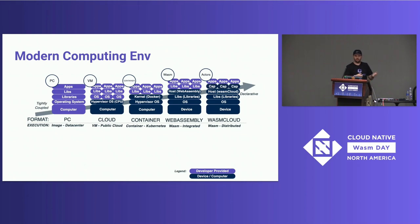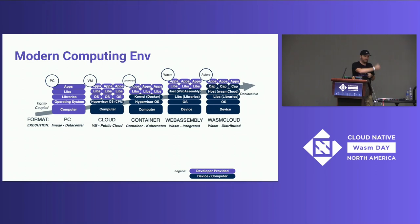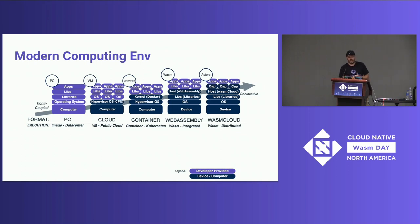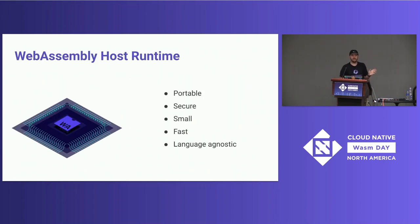This is a history of the modern computing environment. We started with blades in a data center — some of us have pulled a spinning disk out of a running server. We've gone through VMs, which abstracted a little further, then containers which built on top of that, and then WebAssembly itself. Along this path we've gone really far toward usability but we haven't gotten all the way there. WasmCloud is a system that allows us to abstract a little bit further and abstract out those non-functional requirements.